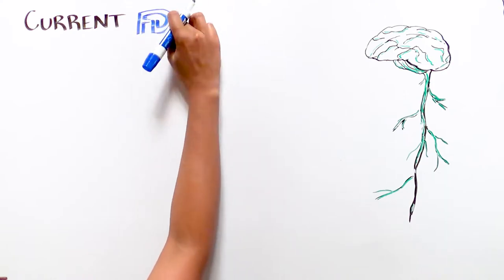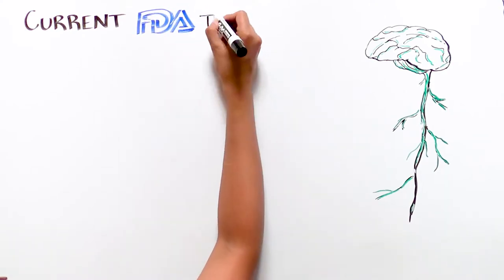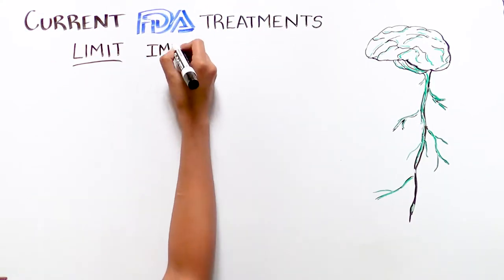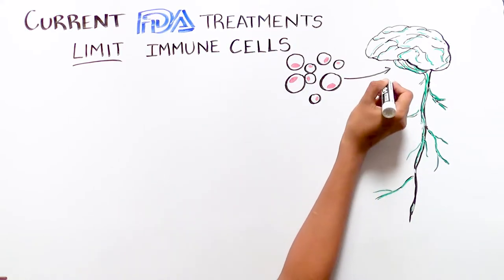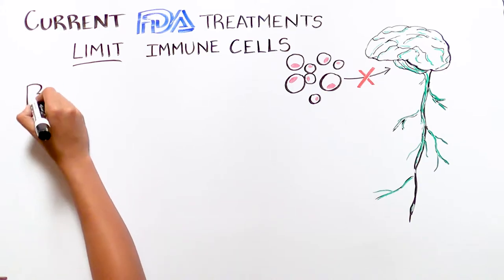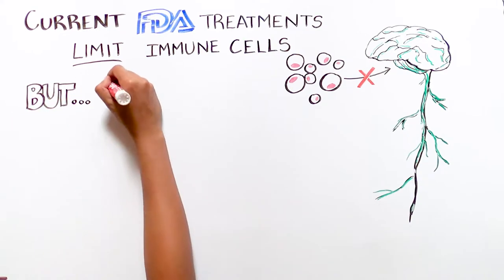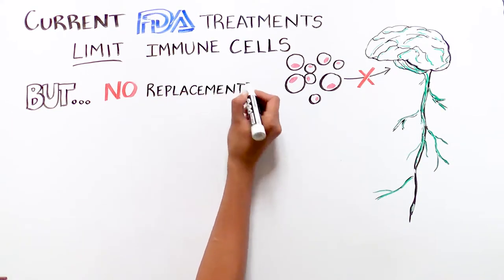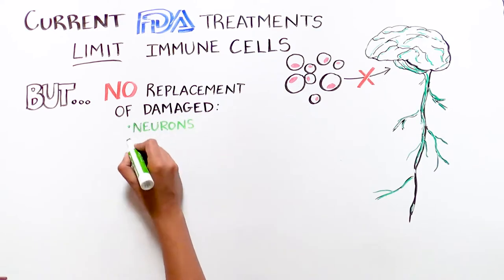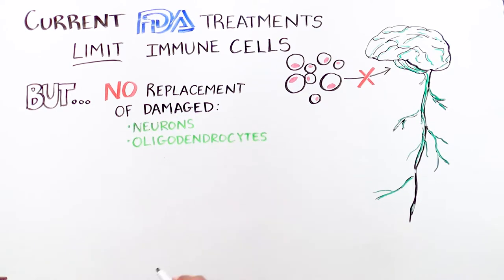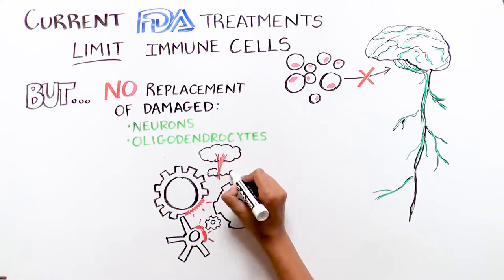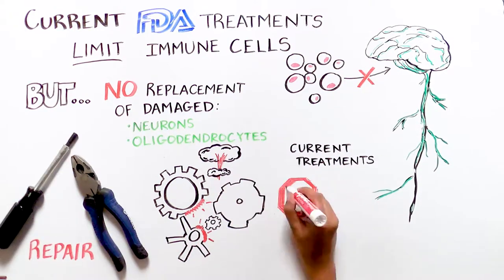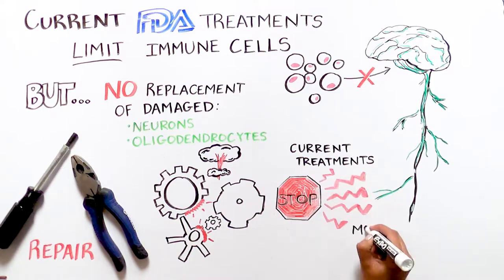All of the current FDA-approved treatments for MS limit the destructive immune cells from entering the brain and spinal cord to try to stop them from damaging myelin. However, these treatments don't do anything to help replace the damaged neurons and oligodendrocytes in these patients. Instead of trying to repair a broken machine piece by piece, currently available treatments only prevent the machine from enduring further damage.